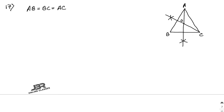For the construction: draw a perpendicular bisector of AB and BC intersecting each other at O. Suppose this point is D and this point is F. Then join AD, OB, OC, and CF.